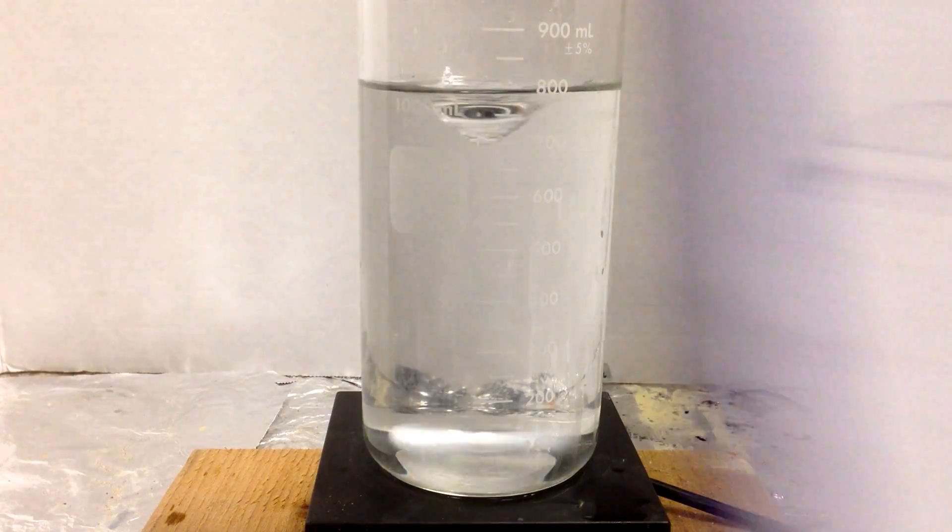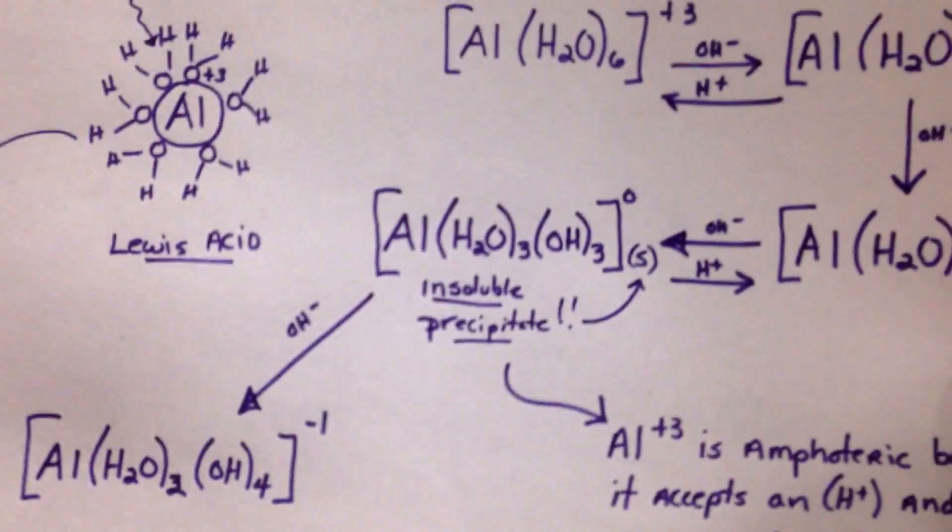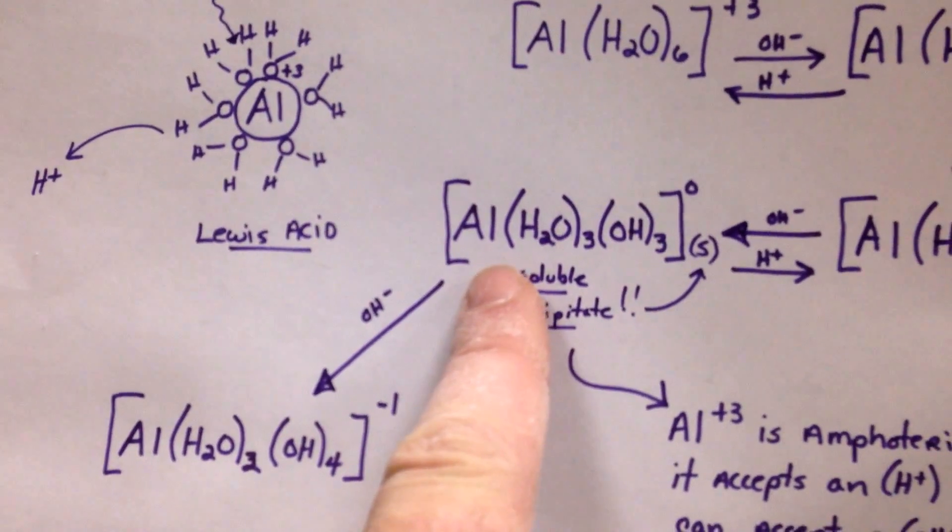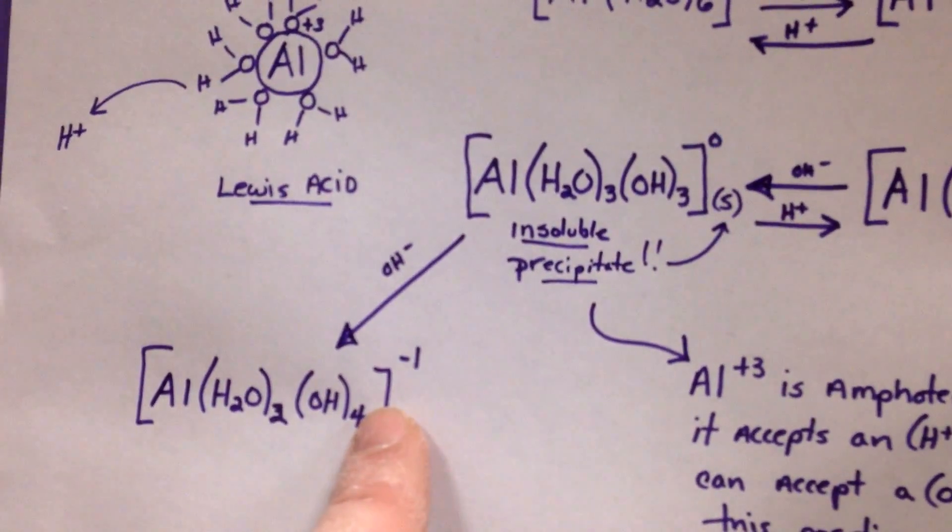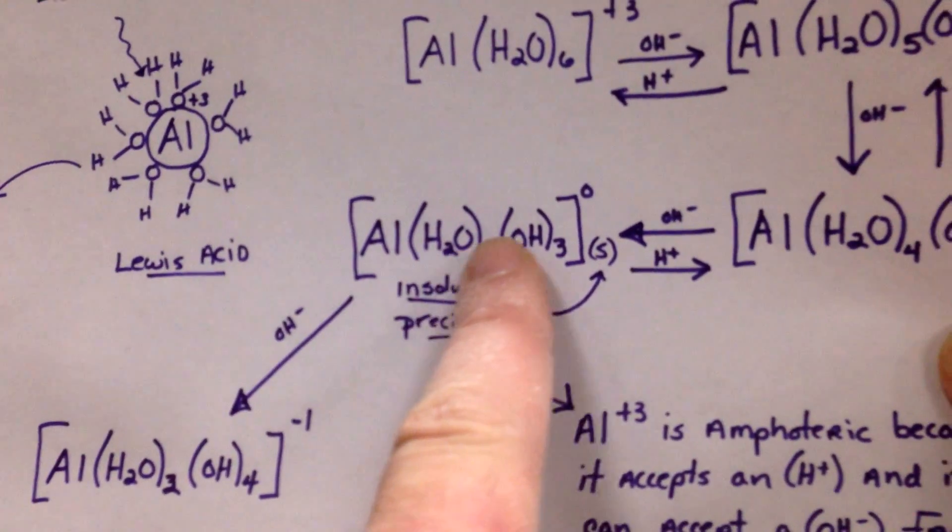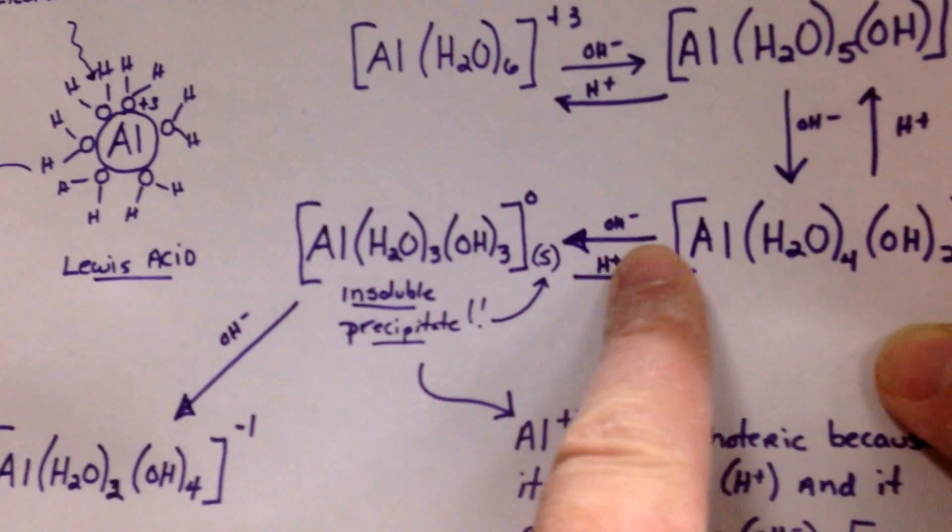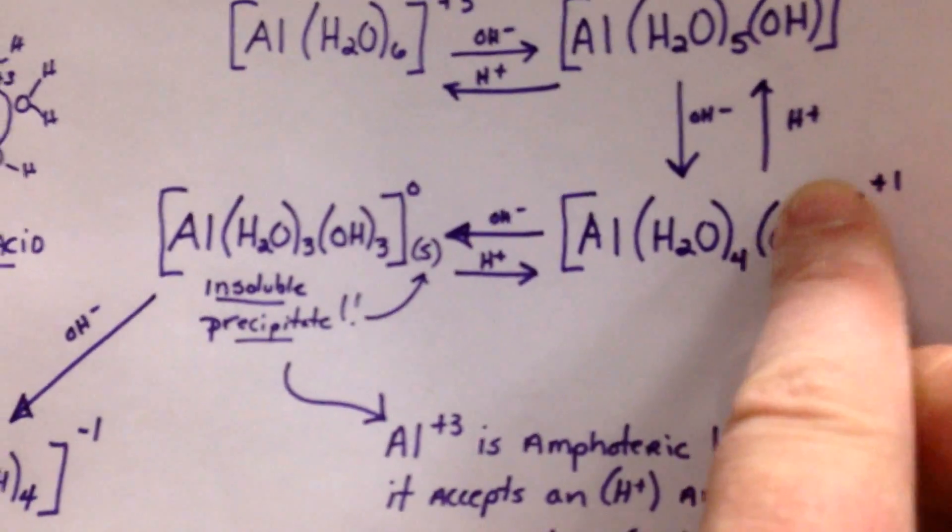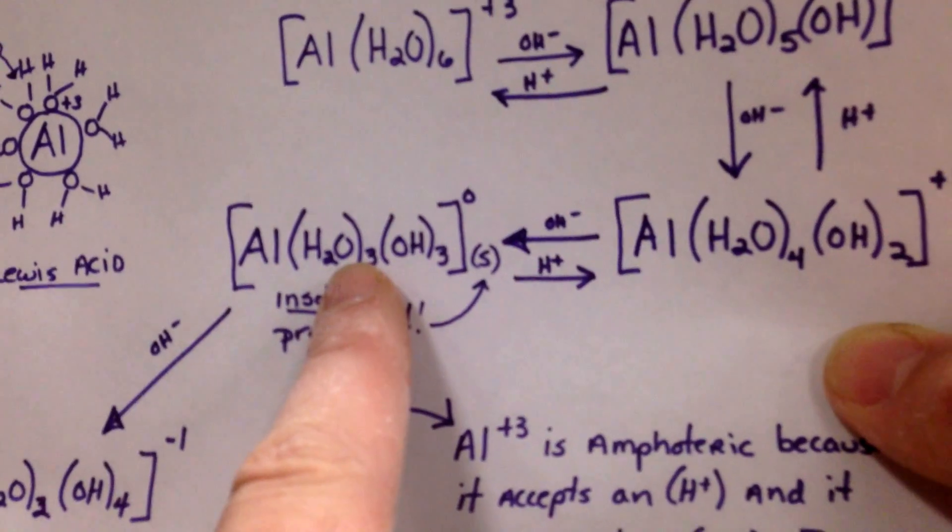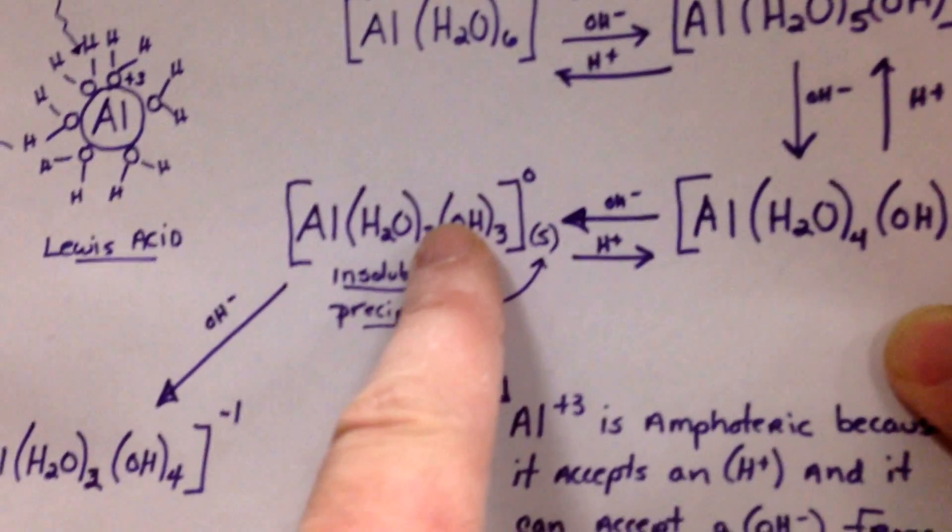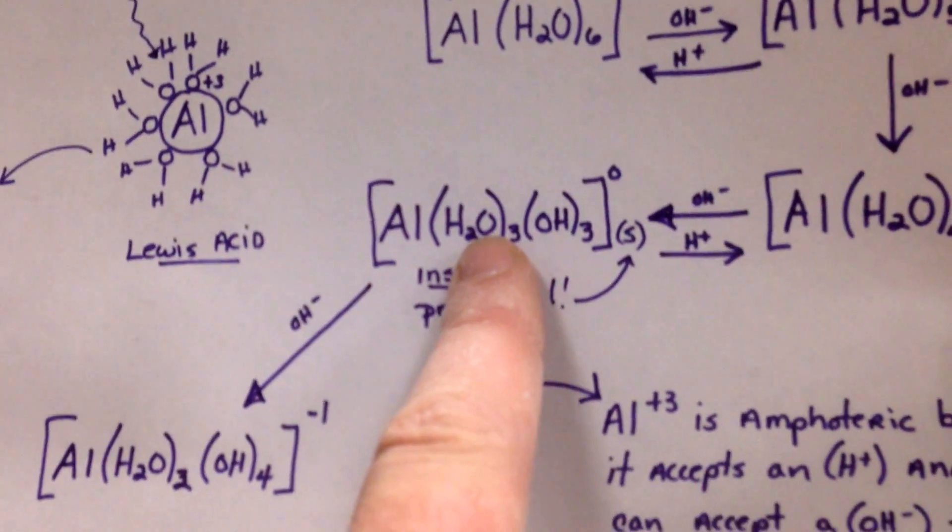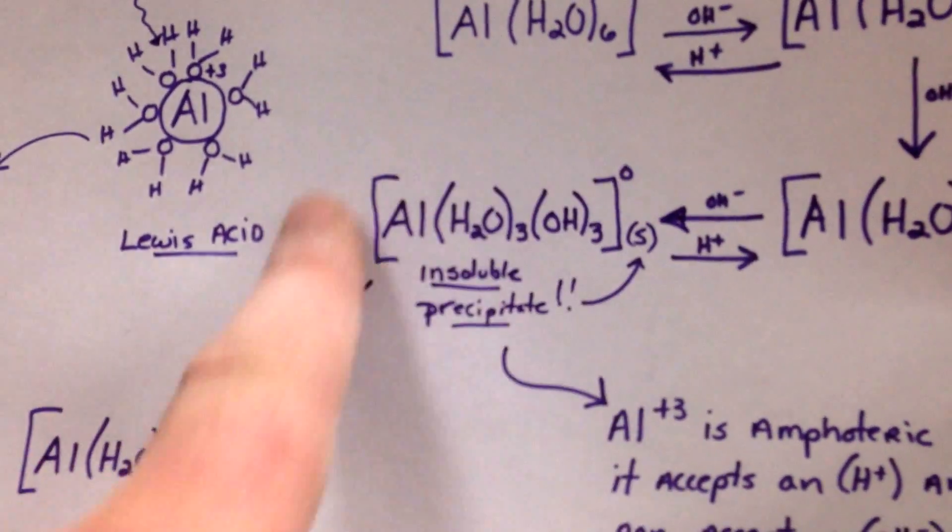Why does that work? Because this can act as an acid and donate a proton and become negative one and dissolve. Or it can act as a base and accept a proton and get charged to a plus one. So it can go both ways. Act as a base by accepting protons and becoming plus one, or act as an acid and give off H's and become negative one. That's what makes it amphoteric.